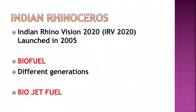Let us look into the Indian rhinoceros. Assam has 91 percent of India's total rhino population, with the majority in Kaziranga National Park and a few in Pobitara Wildlife Sanctuary. It is categorized as Vulnerable and is a Schedule 1 animal under WPA 1972. Kaziranga National Park in Assam holds about 70 percent of the world's one-horned rhino population.